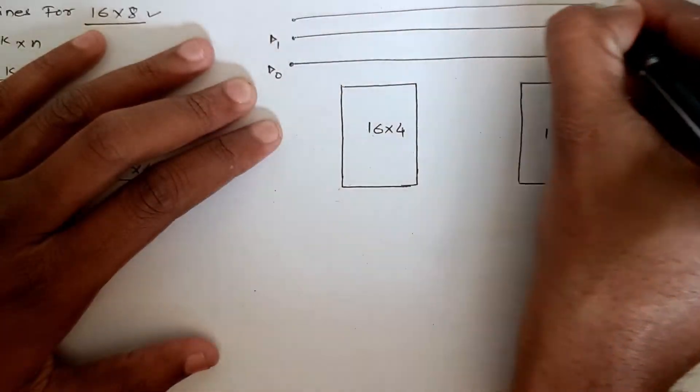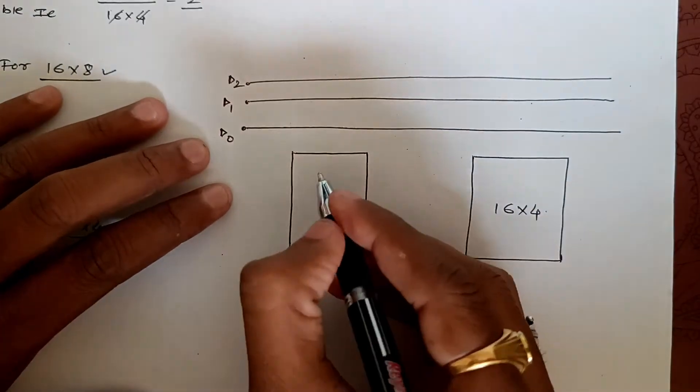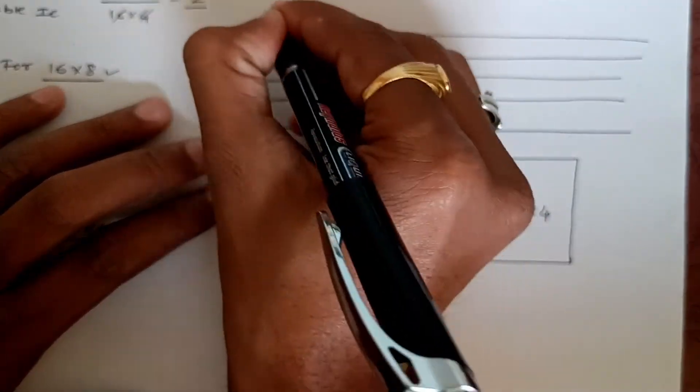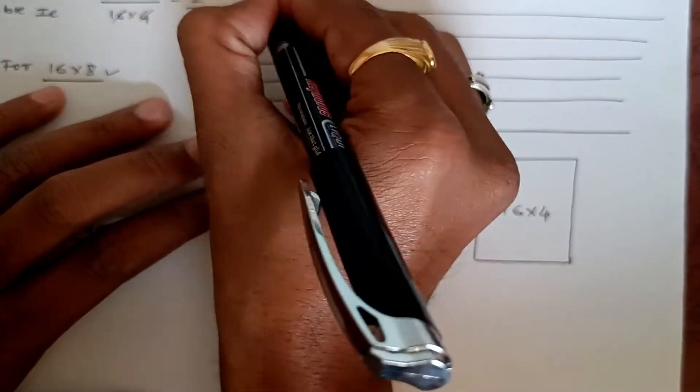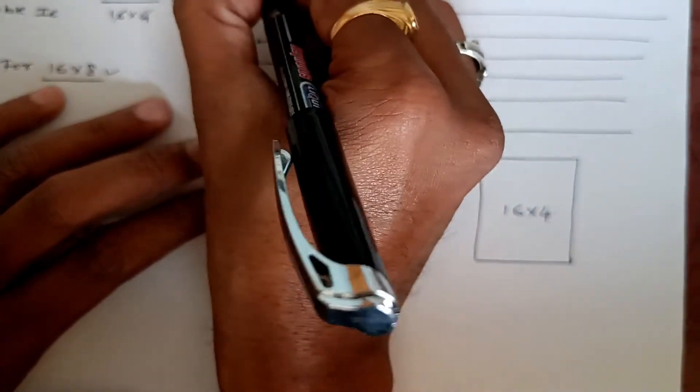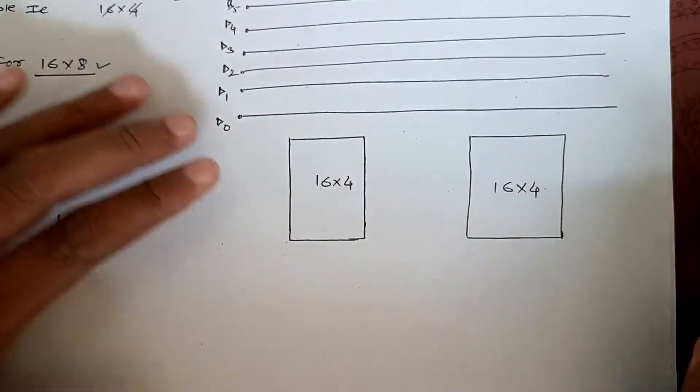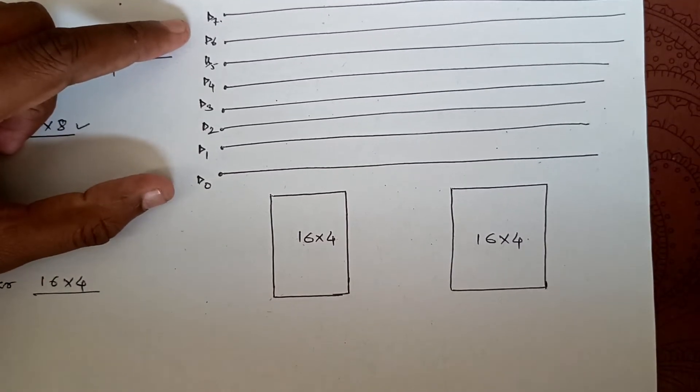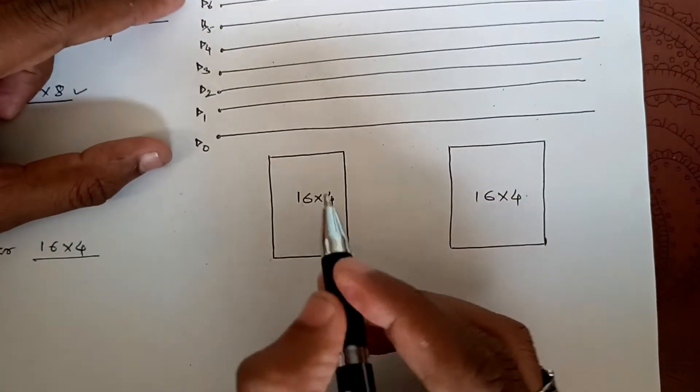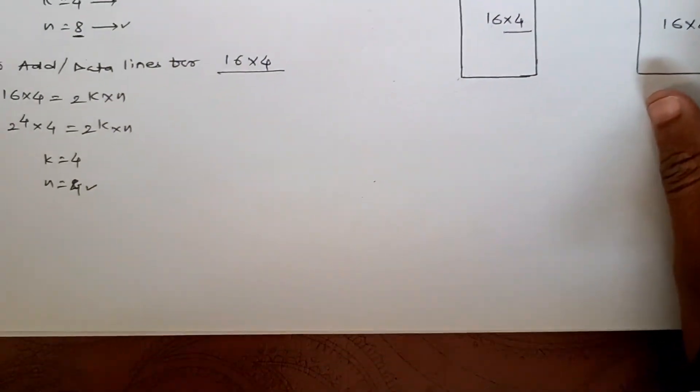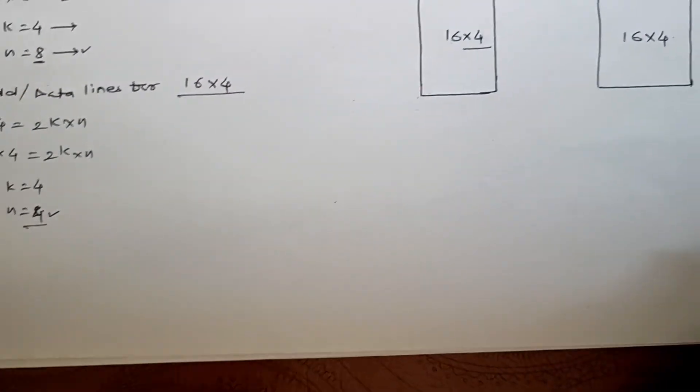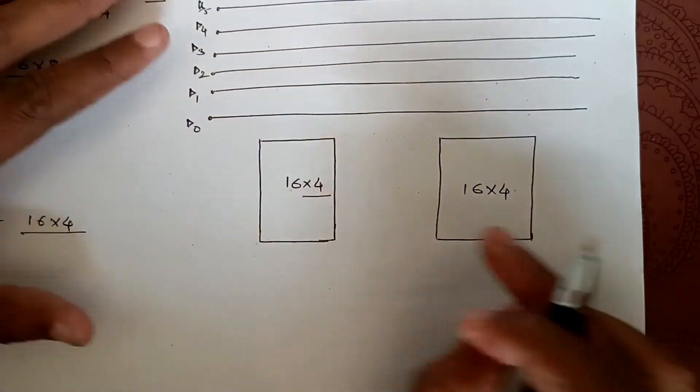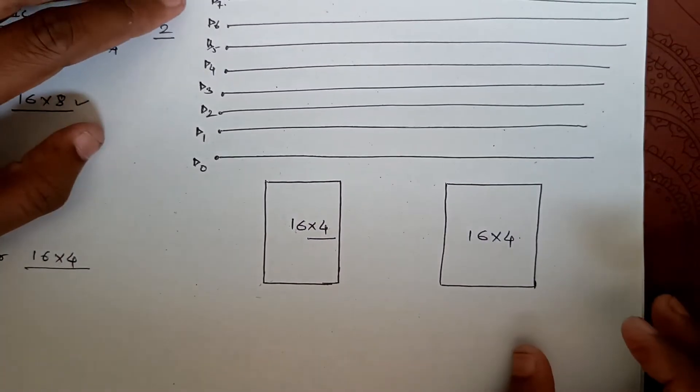Let's draw the 8 data lines: this is d0, this is d1, this is d2, in the same manner we'll draw all remaining lines, and this one is d7. So we have drawn all the ICs as well as data lines starting from d7 to d0. Now let's connect them. Each 16 by 4 IC needs 4 data lines, so we'll connect 4 data lines to each IC.